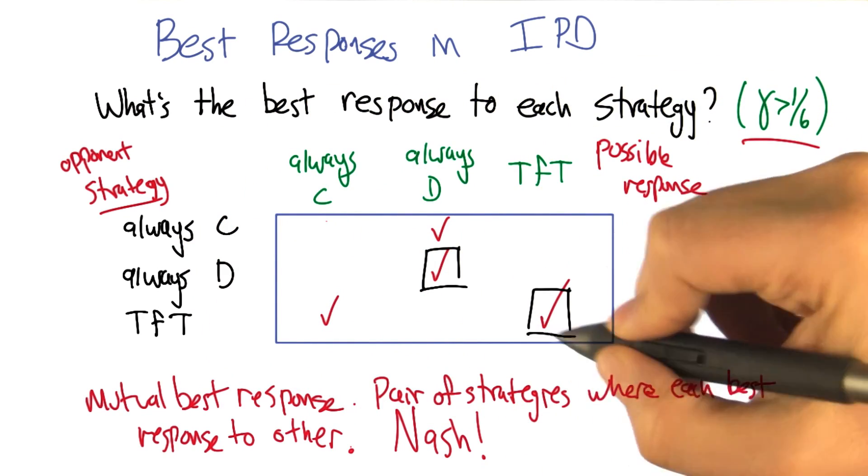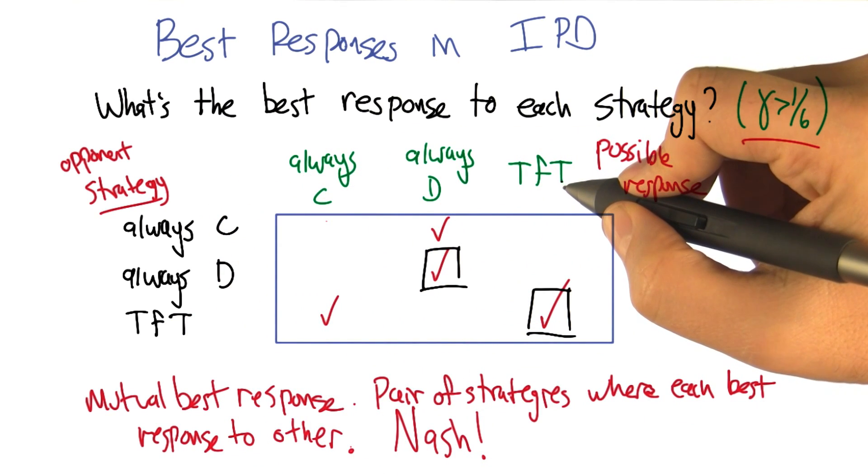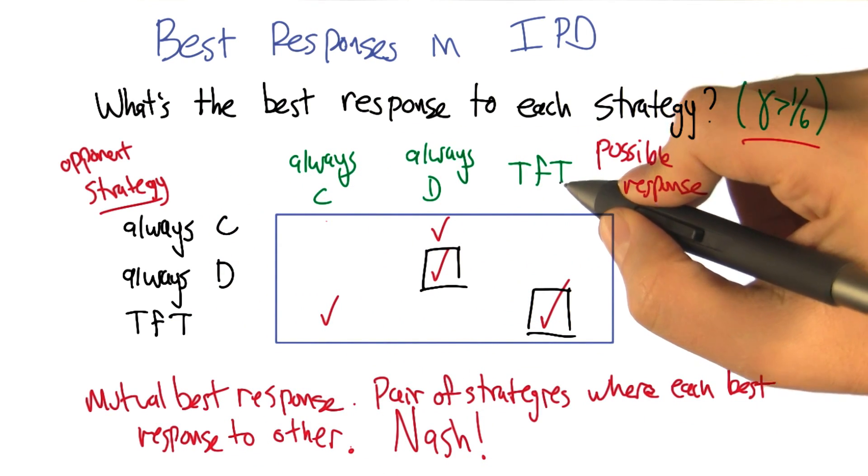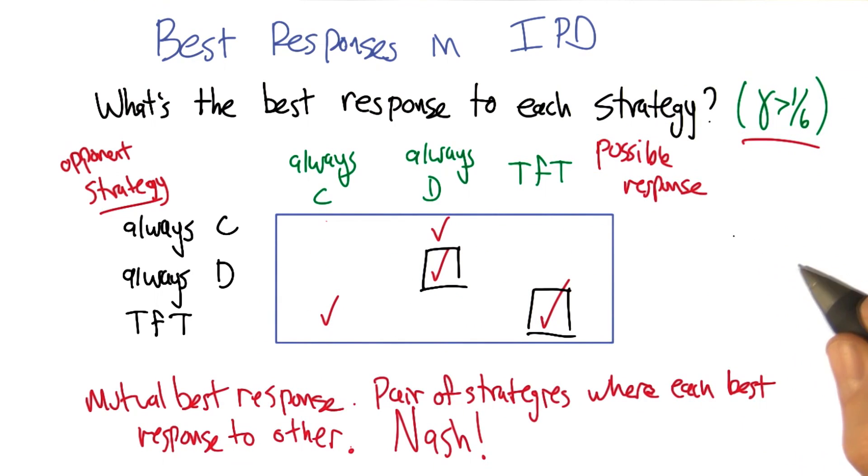But check this out. If you are playing tit for tat, and the other player is playing tit for tat, there's no reason to switch, because it's actually a best response. It's the optimal thing to do. And that works from both players' perspectives. And that makes sense. So like you said, check this out, and you've been using check marks. That's very good. So we're in this situation where we have two Nash equilibria.